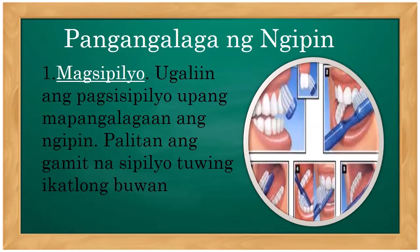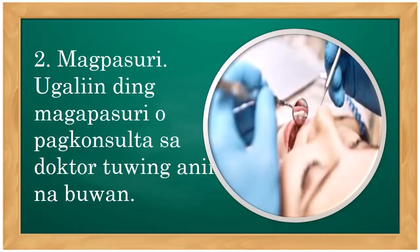Paano natin pangalagaan ang ating ngipin? Una, magsipilyo. Napakahalagang magsipilyo tayo pagkatapos kumain at pagkagising sa umaga. Ugaliin ang pagsisipilyo upang pangalagaan ang ngipin. Palitan ang gamit na sipilyo tuwing ikatlong buwan — may expiration din ang toothbrush. Kapag nabili mo ngayon, halimbawa Enero, magpapalit ka ng Marso. Pangalawa, magpasuri — ugaliin ang magpakonsulta sa doktor tuwing 6 na buwan para makita kung ano ang dapat na ayusin at kung may mga sira-sira na mabigyan ng karampatang lunas.